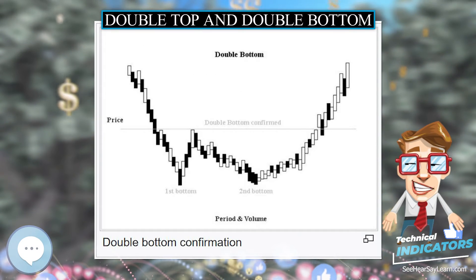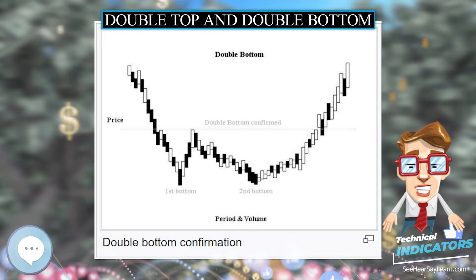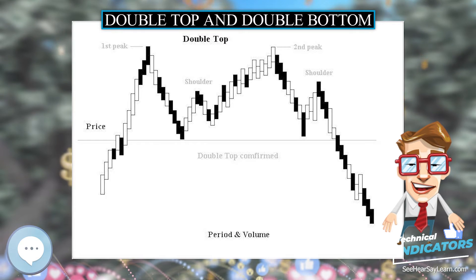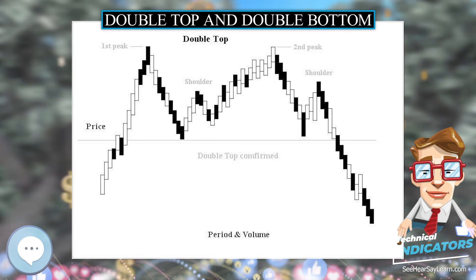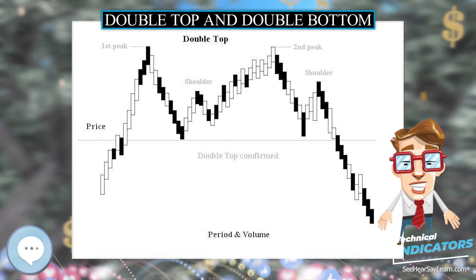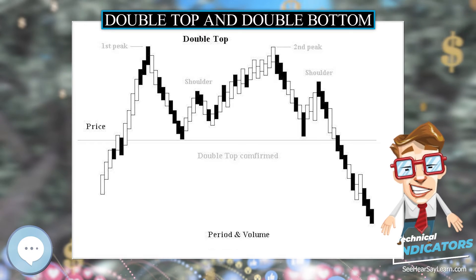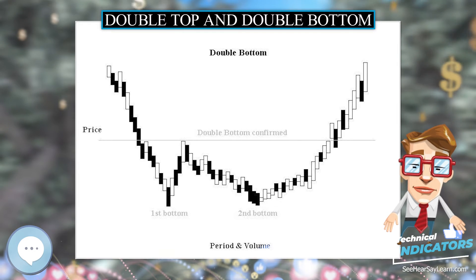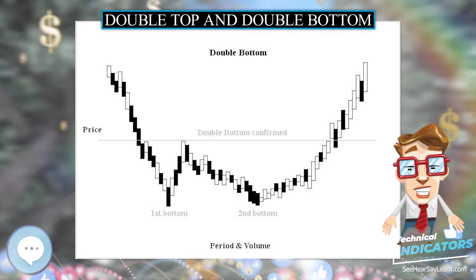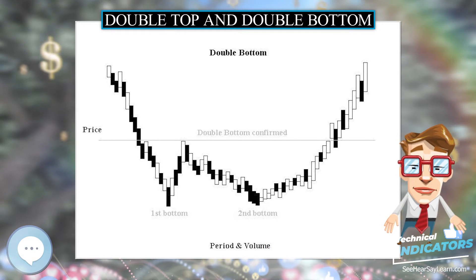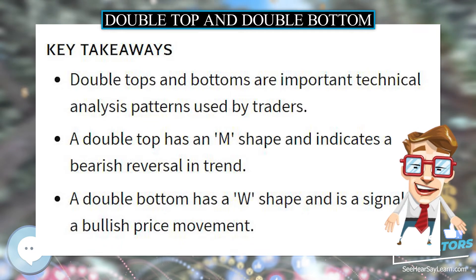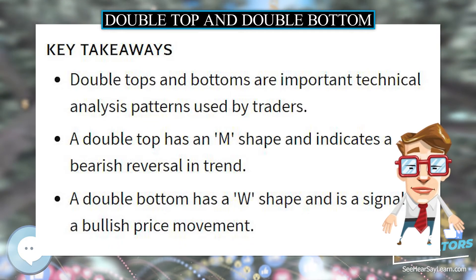It is generally regarded as a bearish signal if prices drop below the neckline. The time between the two peaks is also a determining factor for the existence of a double top pattern. If the tops appear at the same level but are very close in time, then the probability is high that they are part of a consolidation and the trend will resume.